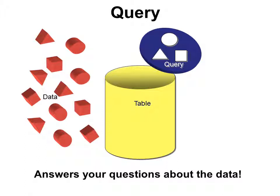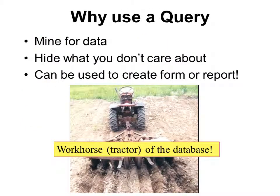The next object in an Access database is the query, and this is the most powerful — the one you're going to be in the most. You'll probably be creating queries until you stop using the database, because queries answer the questions you have about your data. Once you get all that data in there, you're going to want to know: who ordered within the last 30 days? What employees have not been updated yet on their computer? It allows you to mine for data. Data is just big piles of raw information, but when you can render it down and find just the information you seek, that's called mining for data. It essentially hides what you don't care about — you don't want to delete it, you just want to hide it for next time. This is what I call the workhorse of the database.